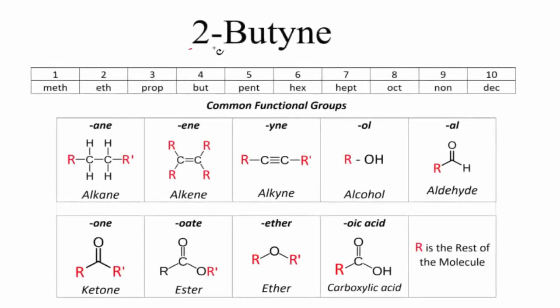Let's write the structural formula for 2-butyne. If we write the molecular formula for 2-butyne, that's C4H6. But when we write the structural formula for 2-butyne, that shows us how everything is arranged, how the atoms are arranged. So let's do that.